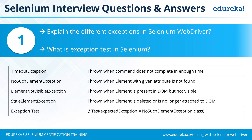ElementNotVisibleException is thrown when the element is part of the DOM but it is not visible — it will not be available on the screen though it is present in the DOM. StaleElementException is a very commonly thrown exception with web pages. It is thrown when an element is deleted or is no longer attached to the DOM — if the element you are trying to find has been deleted or is no longer part of the document object model of the currently loaded page, Selenium throws a stale element exception.